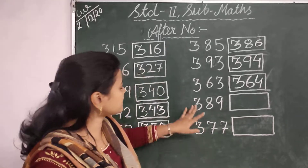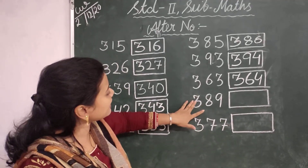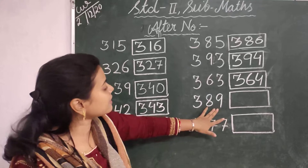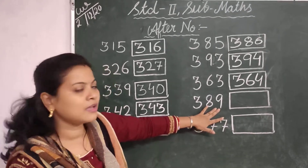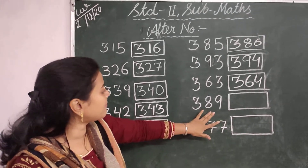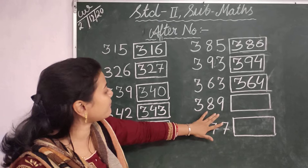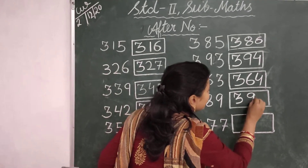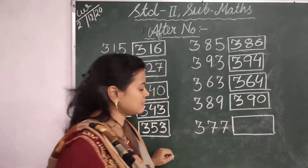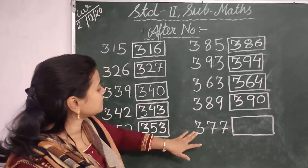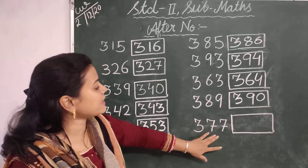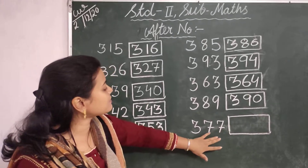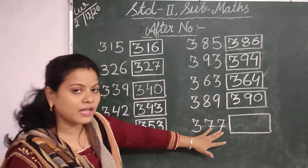Then the next number that comes after 377. Here 77. So the number that comes after 377 is 78, that is 378.